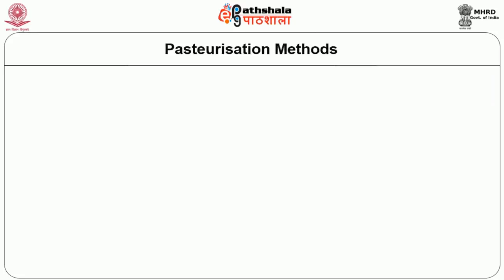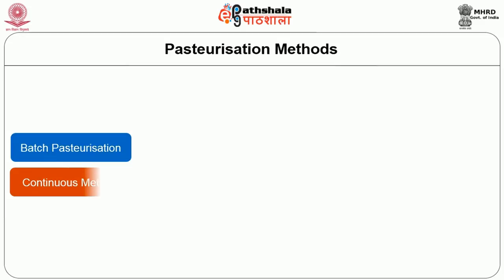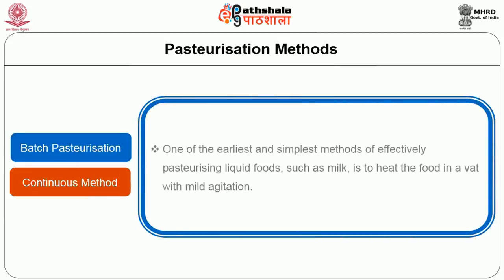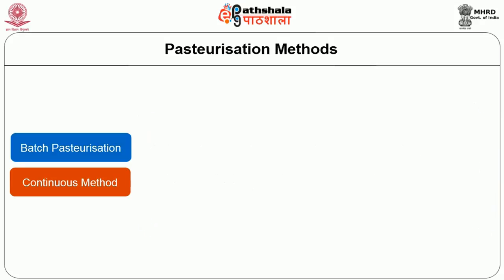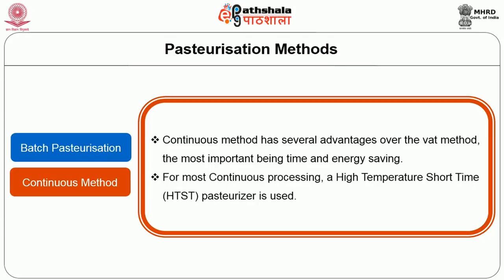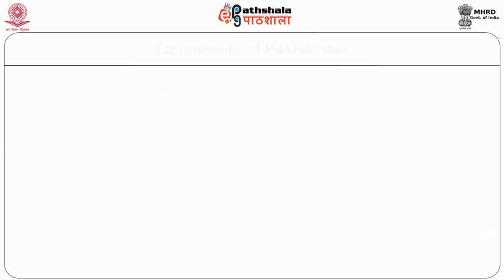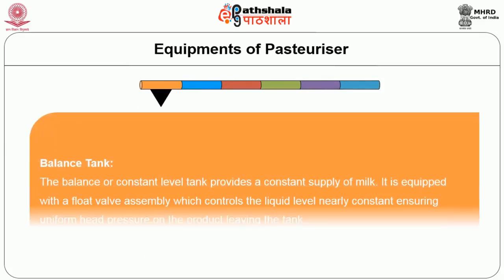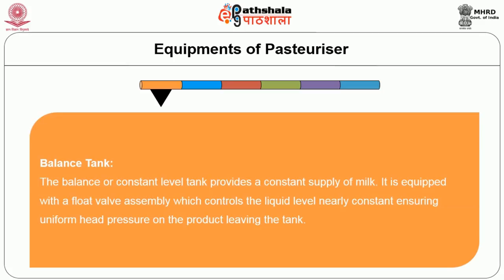The two basic methods of pasteurization are batch pasteurization and continuous method. Batch pasteurization heats the food within a vat with mild agitation — one of the earliest and simplest methods for liquid foods such as milk. The continuous method has several advantages over the vat method, the most important being time and energy saving; it uses a high-temperature short-time (HTST) pasteurizer. Equipment used includes a balanced tank — a constant-level tank equipped with a float valve assembly to ensure uniform head pressure — and a regenerator, which saves heating and cooling energy by using the heat content of pasteurized milk to warm incoming cold milk. Percentage regeneration equals the temperature increase due to the regenerator divided by the total temperature increase.